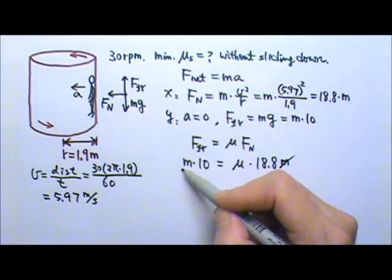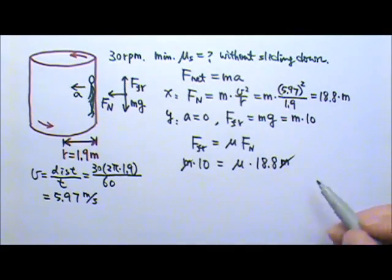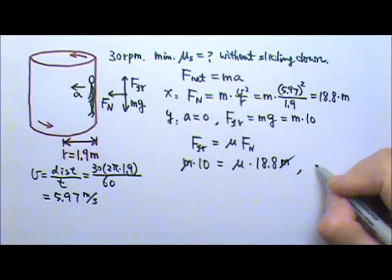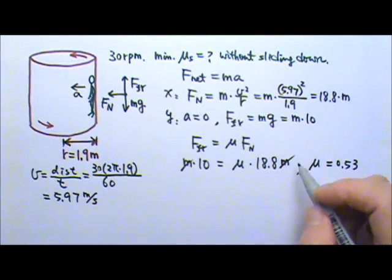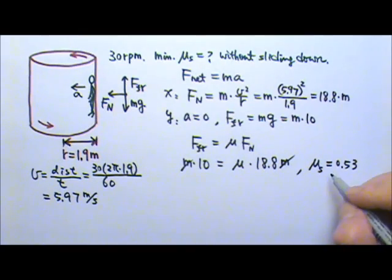And normal force is 18.8 times the mass. So as we expect it to have, the mass cancels. And this way we can find the mu to be 0.53. And since it's a static friction, that's mu_S.